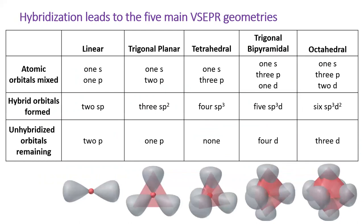I will leave you with this summary slide, which shows how the five main geometries arise from five different mixtures of S, P, and D atomic orbitals.